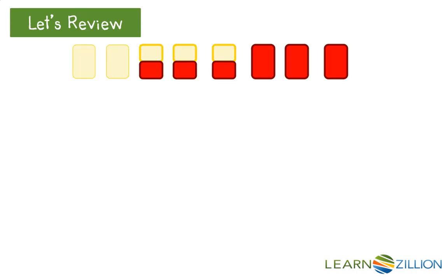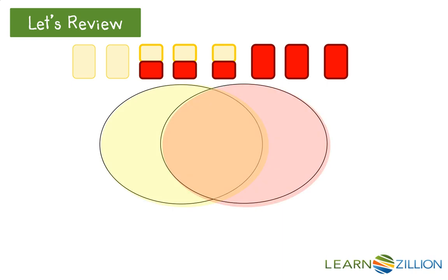Let's review. You already understand the concepts of intersection and union. Intersection is the overlapping region in this Venn diagram, the three cards that are both yellow and red.